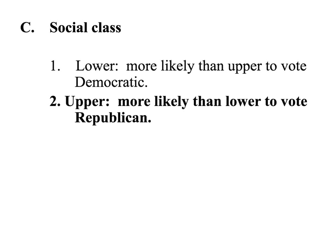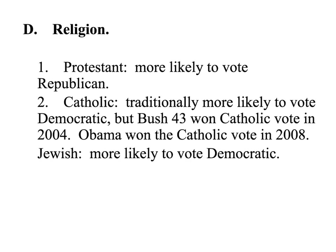Social class plays a role — lower-income people are more likely to vote Democrat, while wealthier people are more likely to vote Republican. Religion is also a factor: Protestants, broadly Christians, are more likely to vote Republican, while Catholics are more likely to vote Democrat.